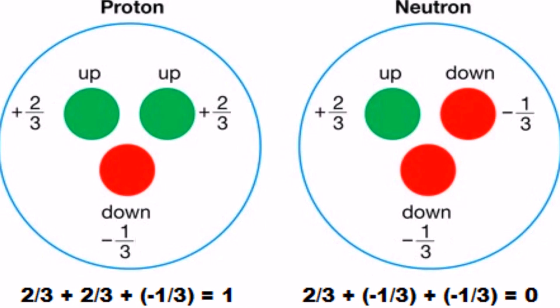A proton is composed of two up quarks and one down quark. A neutron is composed of one up quark and two down quarks. An up quark has a fractional charge of positive two-thirds, and a down quark has a charge of negative one-third.